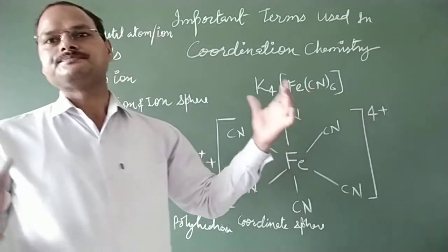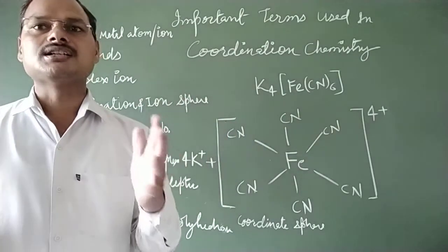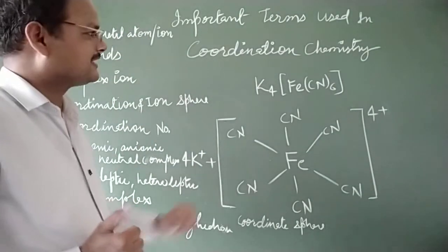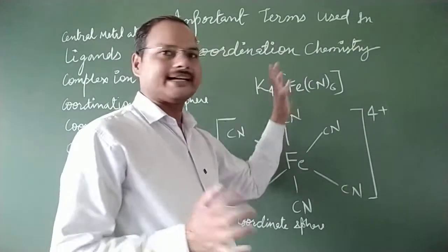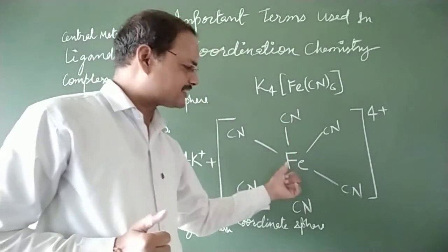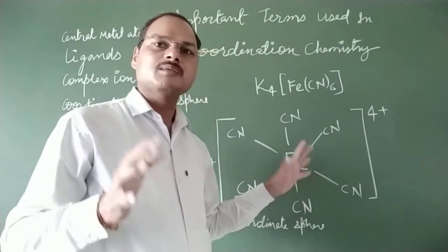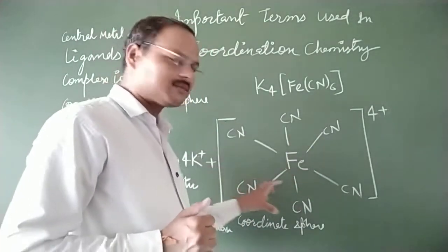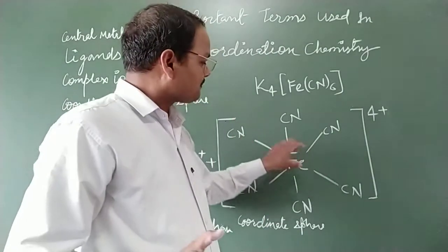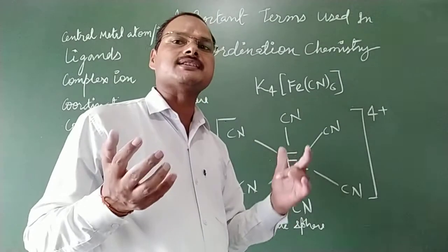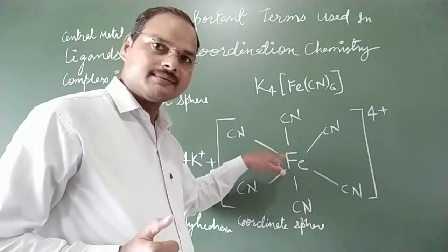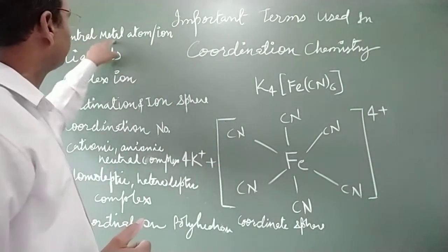Compounds written in this form are known as complex compounds or coordinate compounds. The first term is central metal atom or ion. You can see here there are three types of atoms, and the central one is always a metal. The single atom which is surrounded by a large number of other atoms, group of atoms, or ions is known as the central metal atom. In some cases it may be neutral, and in some cases it may be a positively charged ion.